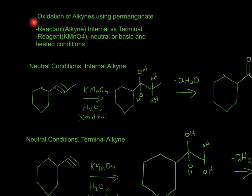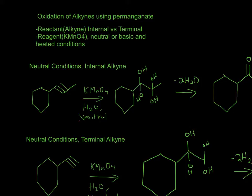For this reaction we have the oxidation of alkynes using permanganate. We'll need a reactant alkyne — either internal or terminal. The reagent conditions are either neutral, or basic and heated. Each of these conditions gives a different reaction, so we'll go through each one.